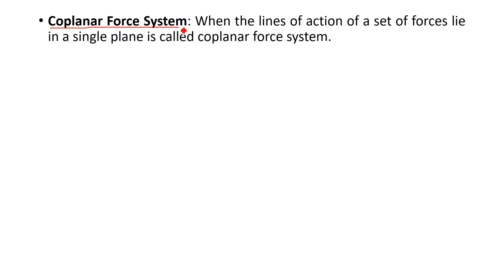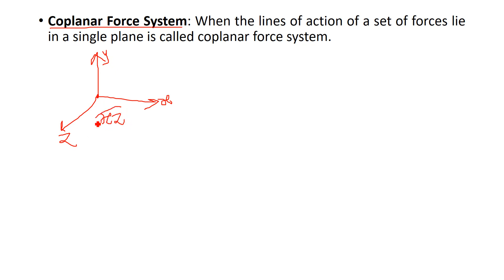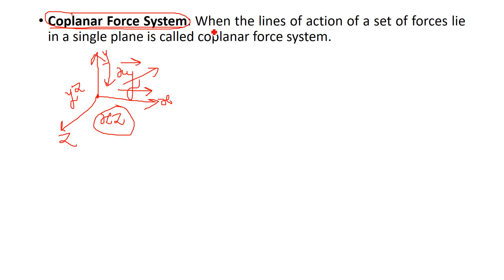Coplanar force system means when all forces are acting in a single plane. There are three mutually perpendicular planes at any point: x-z plane (horizontal), x-y plane (vertical), and y-z plane. If all forces are acting in a single plane, it is called a coplanar force system. The definition is: when the lines of action of a set of forces lie in a single plane, it is called a coplanar force system.